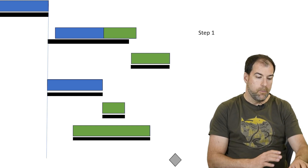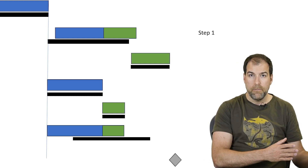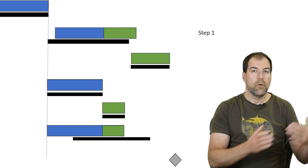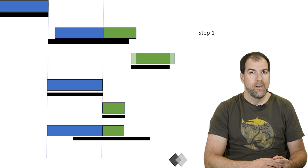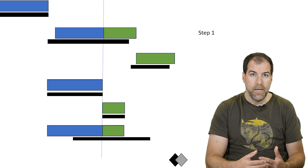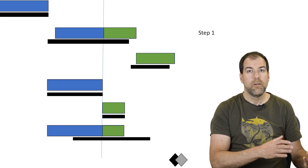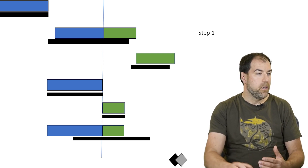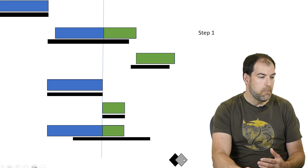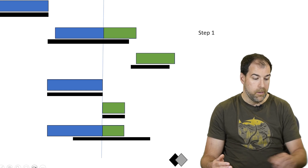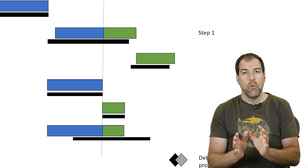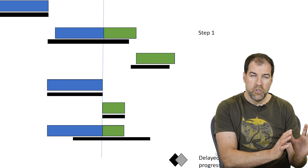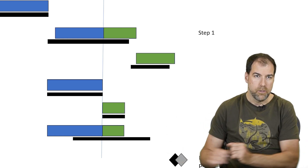For a contrasting example, the third activity was actually started early — earlier than anticipated. After rescheduling, you can see there are some shifts: future activities have moved and the finish milestone has been delayed. The total effect? Let's say we're delayed 10 days due to just progress. That's important — what we want to do is separate progress changes from non-progress changes. So let's move to step two.